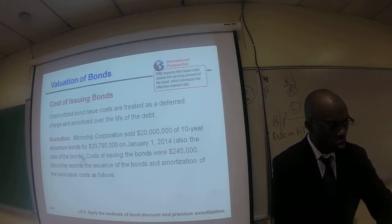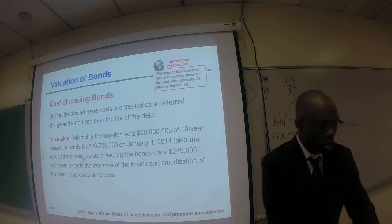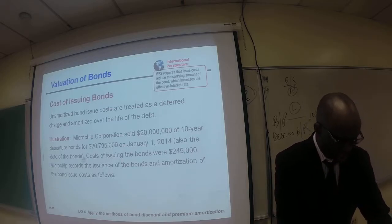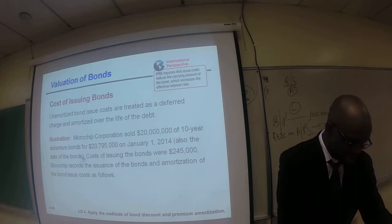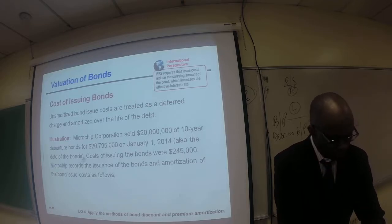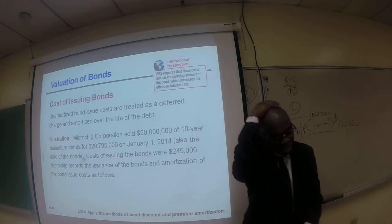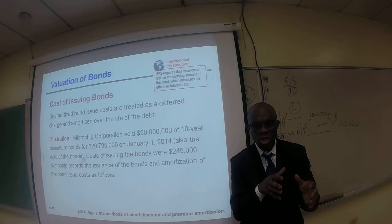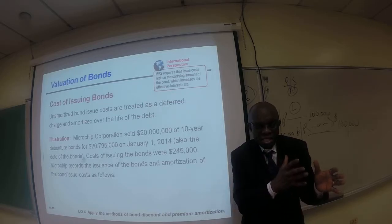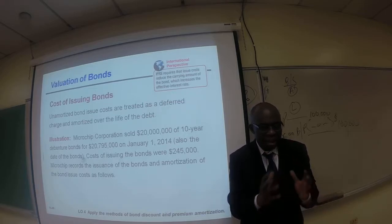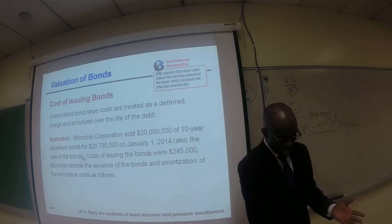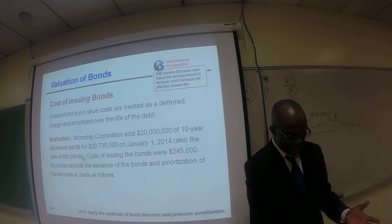Here is another issue relative to valuation of bonds: cost of issuing bonds. These are the related costs of actually issuing the bond — the printing, legal fees, and so on. The cost of issuing the bond is treated as a deferred charge, meaning it is an asset, and then we amortize that amount over the life of the bond. Here is an example.